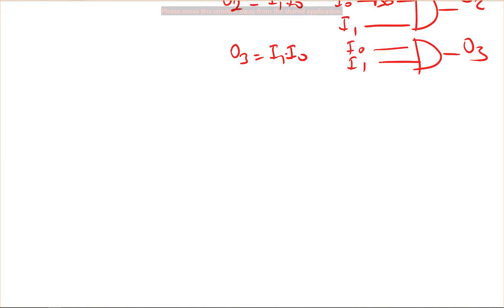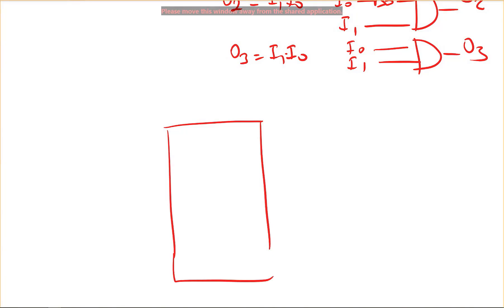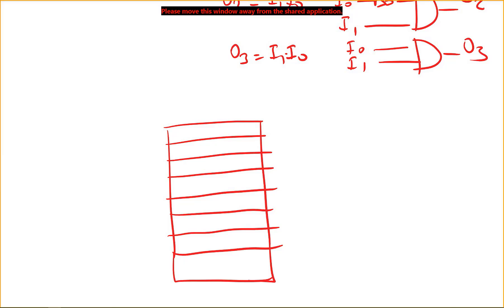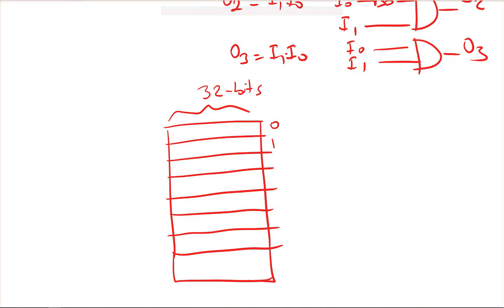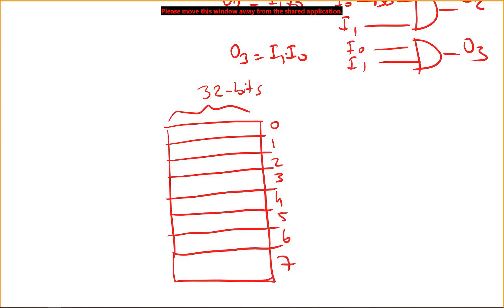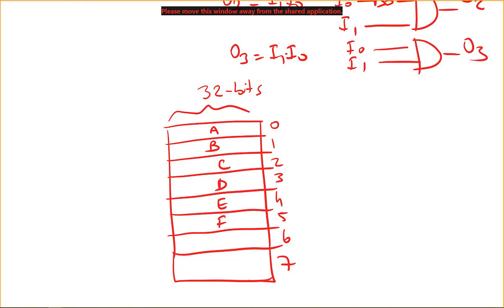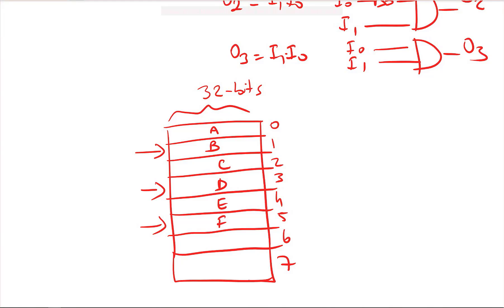One common application of the decoder is in memory, to select one of the memory addresses. Consider a memory unit with eight locations — location zero through seven — where each location stores 32 bits. We might store variable A in location zero, B in location one, C in location two, and so on. We may need to read or write to different locations at different times, so we use a decoder to select the right address.